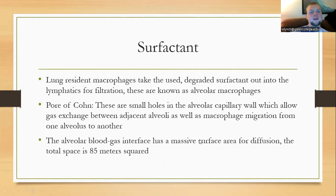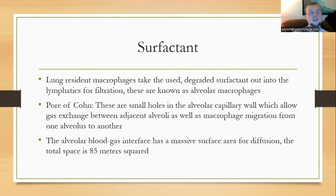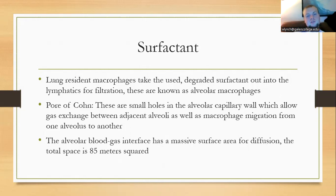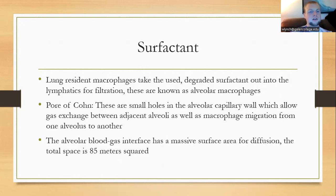Between the alveoli, we have what are known as the pores of Kohn — little holes inside the capillary wall where gas exchange happens. The alveolar blood-gas interface — the surface area available for exchange between the atmosphere and the bloodstream — is quite massive. If we pulled all the alveoli out and stretched them across the ground, they would cover 85 square meters.